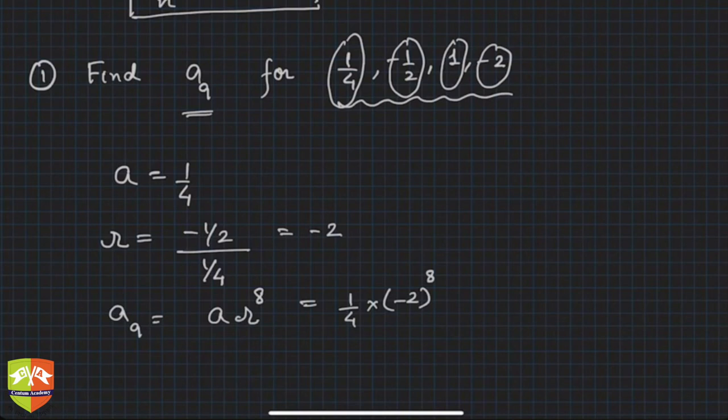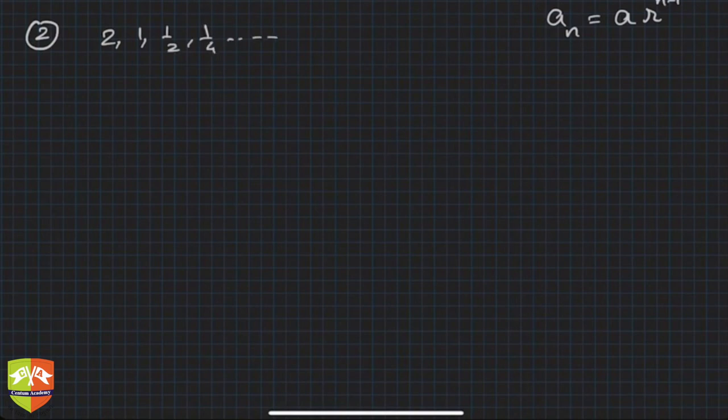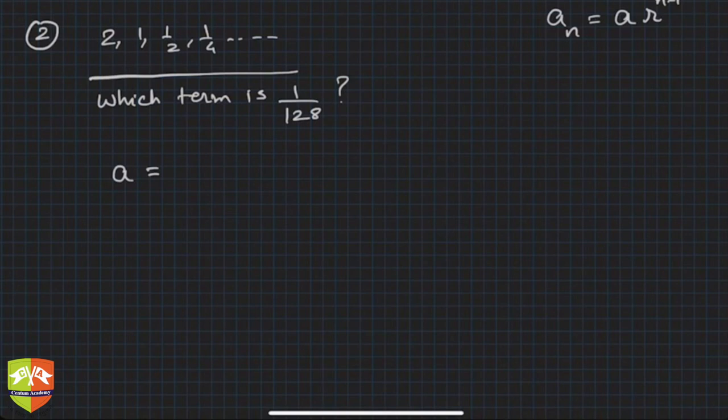Question number 2: keep in mind an is equal to ar^(n-1). Now consider this GP: 2, 1, 1/2, 1/4. In this GP, which term is 1/128? Find n in this case. a is 2, r is 1 upon 2.